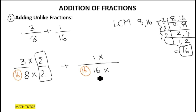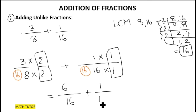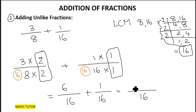Now for the second fraction, one-sixteenth: since sixteen is already the new denominator, I multiply the denominator by one and the numerator by one as well. Three times two equals six, the new denominator is sixteen, and one times one is one. We have converted the unlike fractions into like fractions with denominator sixteen. Keep the denominator sixteen and just add the numerators: six plus one equals seven by sixteen.